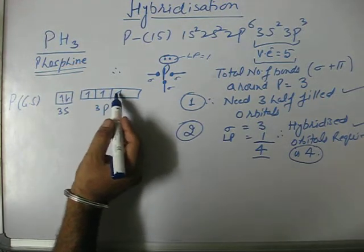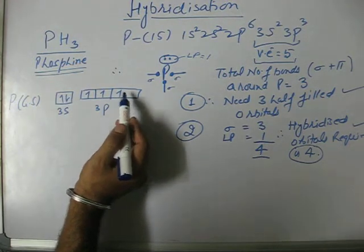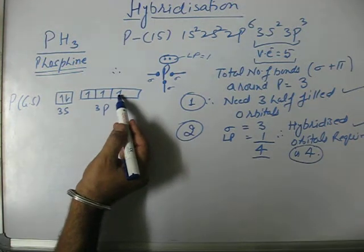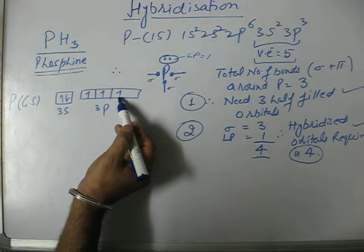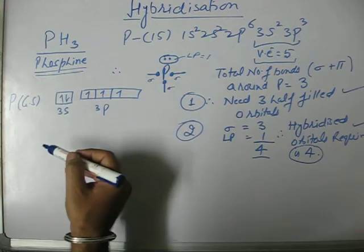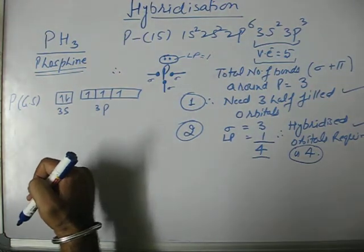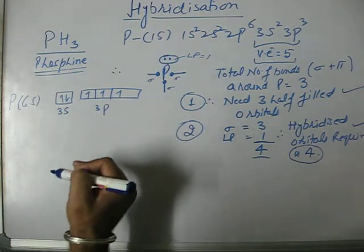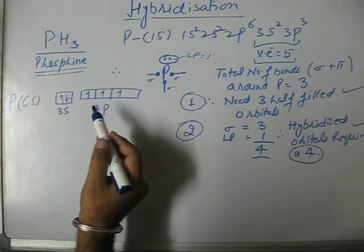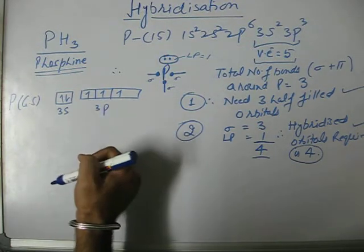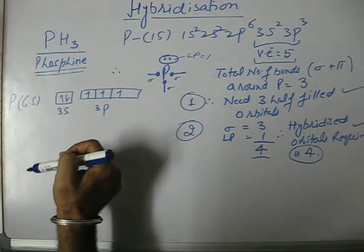Bonding cannot take place at this stage because if we make use of three p orbitals in the valence shell to form three bonds with hydrogen, we could not explain the pyramidal shape of phosphine, since all three p orbitals are perpendicular to each other.